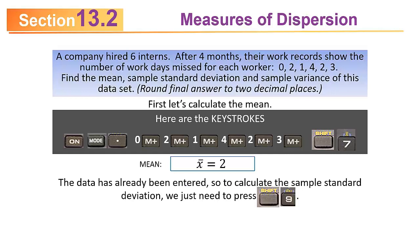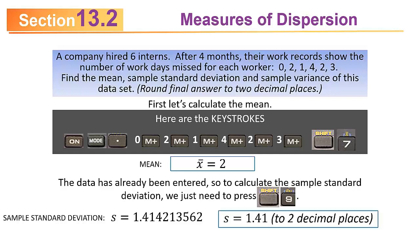The data has already been entered now. So when doing something beyond just the mean, you do not have to re-enter the data. You could clear everything and start over, but if the data has not been cleared, you do not have to put it back in. All you need to do is press shift 9. The sample standard deviation is 1.414213562. You do not have to clear the data and start over. Rounded to two decimal places, you'd get 1.41.